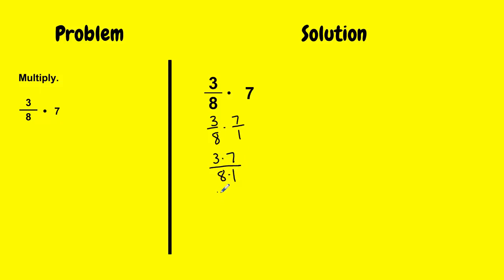I'm just going to multiply my numerators together. I get 21 over 8 times 1, which is 8. So 3 over 8 times 7 is 21 over 8.